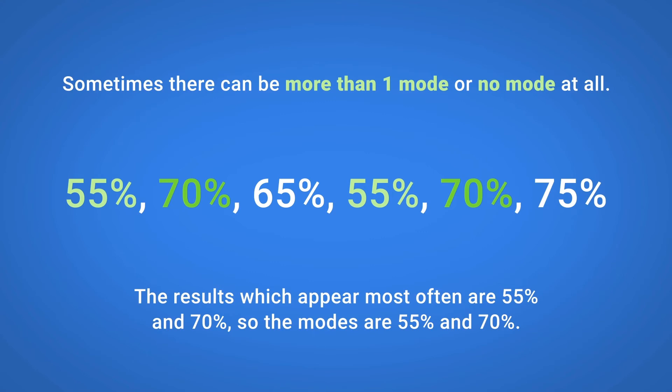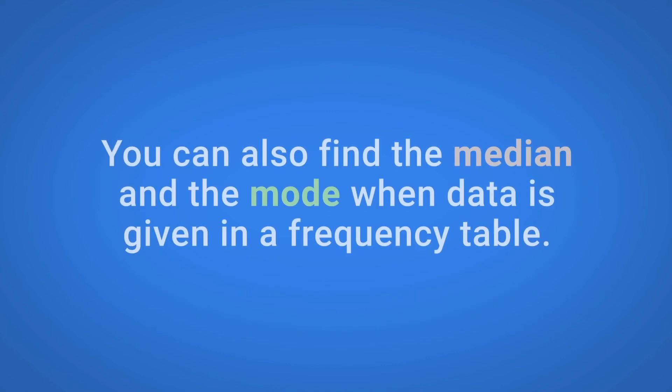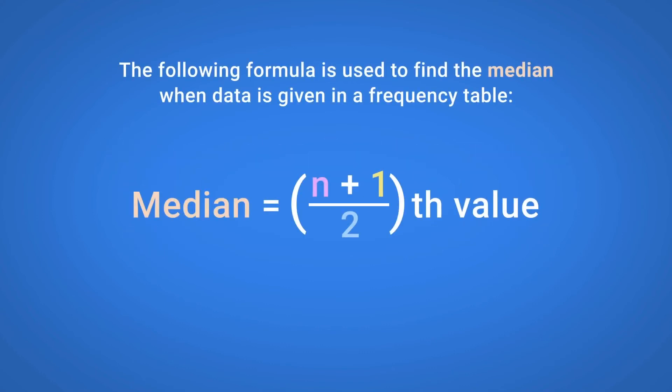You can also find the Median and the Mode when data is given in a frequency table. The following formula is used to find the Median when data is given in a frequency table, where n is the number of values.